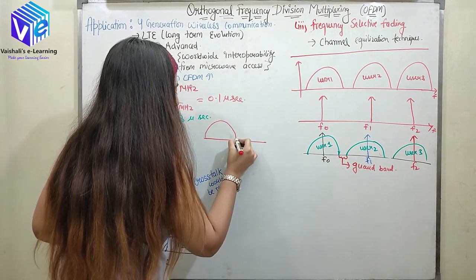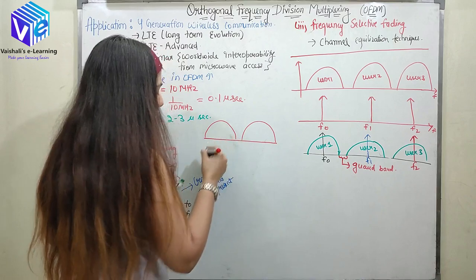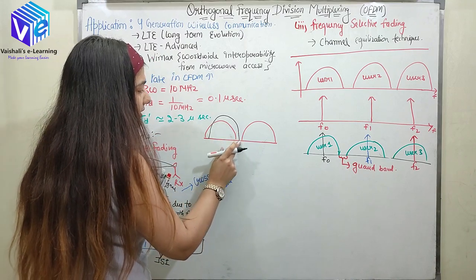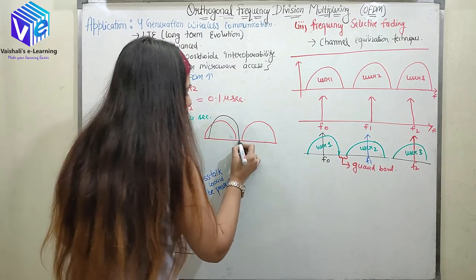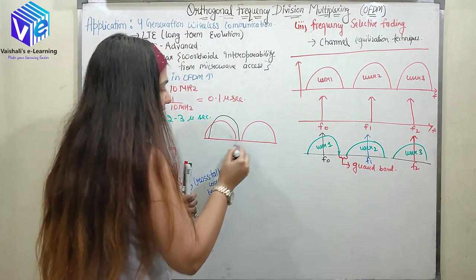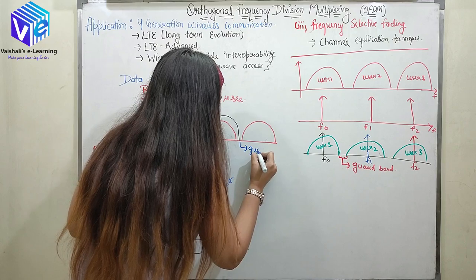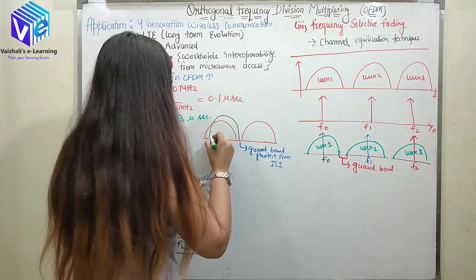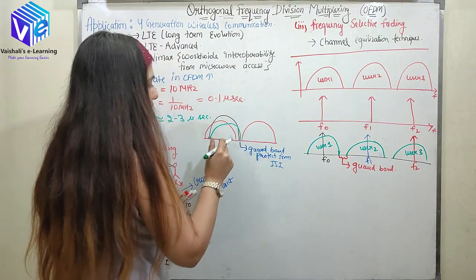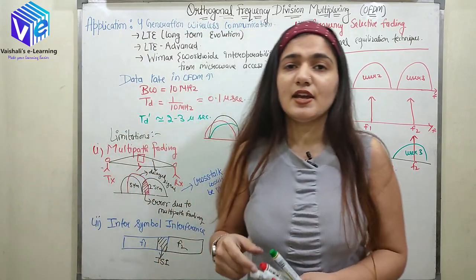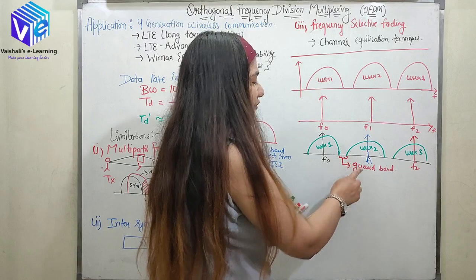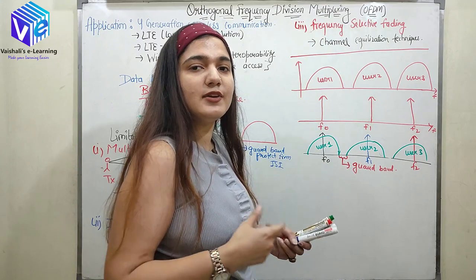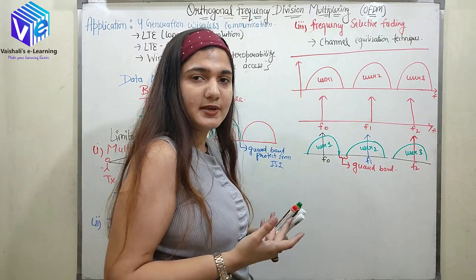If the first symbol and second symbol are separated by a guard band, and a delay occurs, the guard band protects the signals from ISI. Even with further delay, the signal is still saved from ISI. So a guard band is necessary in FDMA. But the trick in OFDM is we don't need a guard band, because of which bandwidth efficiency is really high.